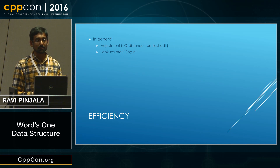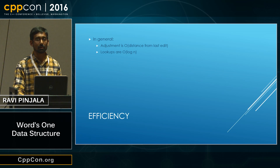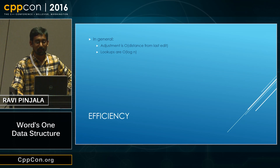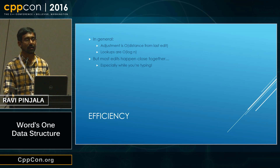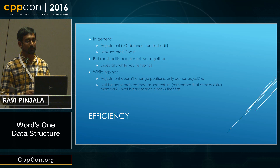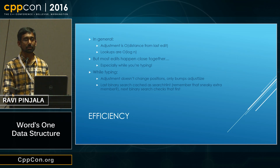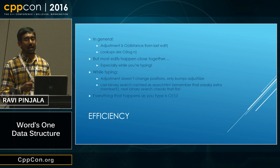So in general, with a scheme like this, adjustment is O(distance from the last edit) in efficiency, and lookups are O(log n) because it's a sorted array — or technically two sorted arrays stuck together, so you can binary search both of them. It turns out that in a word processor, most edits actually happen pretty close together, especially while you're typing, and people really care about the performance of typing. So while you're typing, adjustment doesn't change any positions — it only bumps the size. We cache the result of the last binary search in that search hint I mentioned earlier, and we check that first when searching, and it's always up to date while you're typing. So everything that happens while you're typing with this data structure happens in constant time.